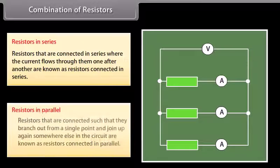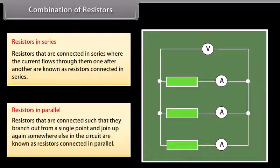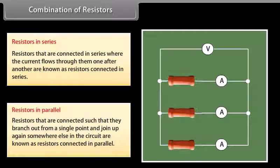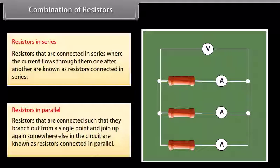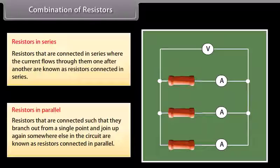Resistors connected such that they branch out from a single point and join up again somewhere else in the circuit are known as resistors in parallel. Here, the current through each component is the same as if it were the only component present. The total current flowing through the battery is the sum of the currents flowing through each branch.